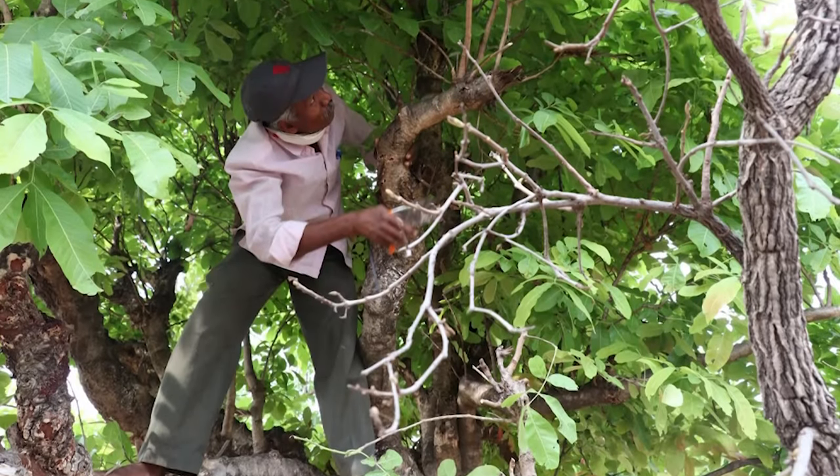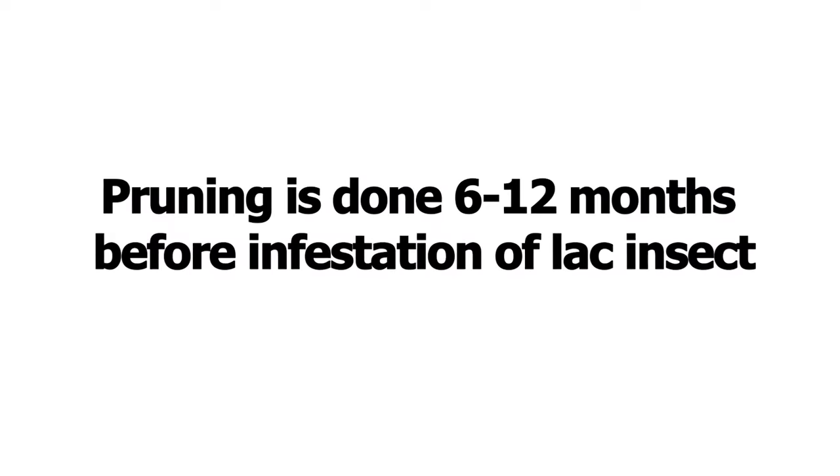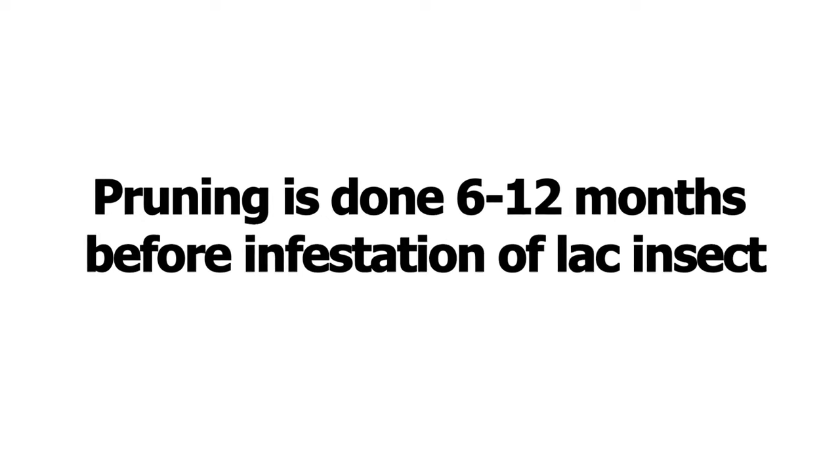Pruning: we have to discuss different aspects of pruning that you need to focus on. Pruning is done almost 6 to 12 months before inoculation. If pruning is done in January or February, then inoculation will be in June or July — almost 6 months after pruning, you can introduce the insects.